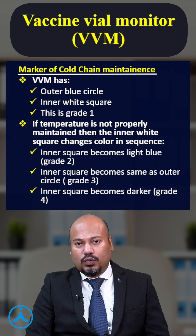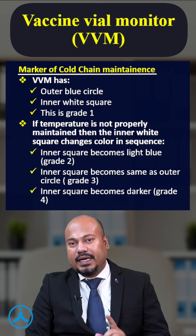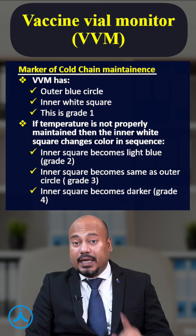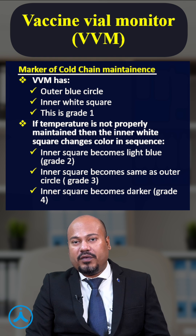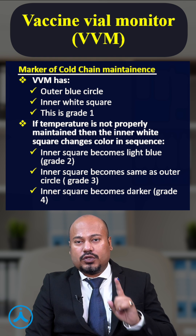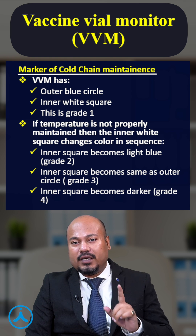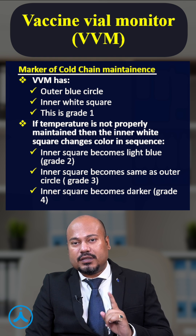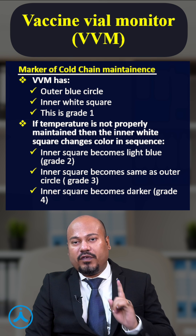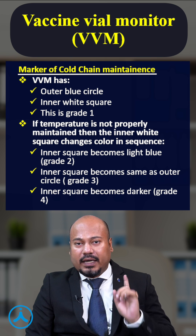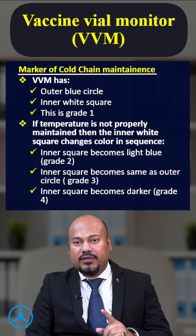Majority of the vaccines are stored at a temperature of plus 2 to plus 8 degrees centigrade. Except OPV, to be stored at minus 15 to minus 25 degrees, and yellow fever vaccine storage temperature minus 30 to plus 5.